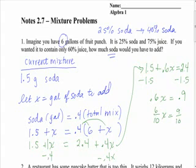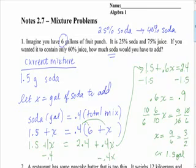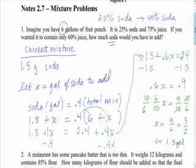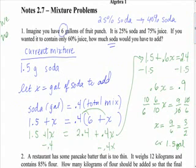If the fractions bother us, we can change this to 6 tenths and 9 tenths. Now multiply each side by 10 over 6. Tens go away. 9 over 6 reduces to 3 over 2 or 1.5 gallons. We have to add 1.5 gallons of soda.